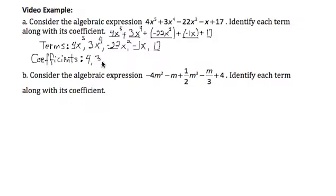So here are my coefficients. I'm going to separate them by commas: 4, 3, negative 22, negative 1, and then 17. So when you're writing out these pieces according to the definitions, the vocabulary, remember that coefficients are just the numbers in front of the term, the variable,